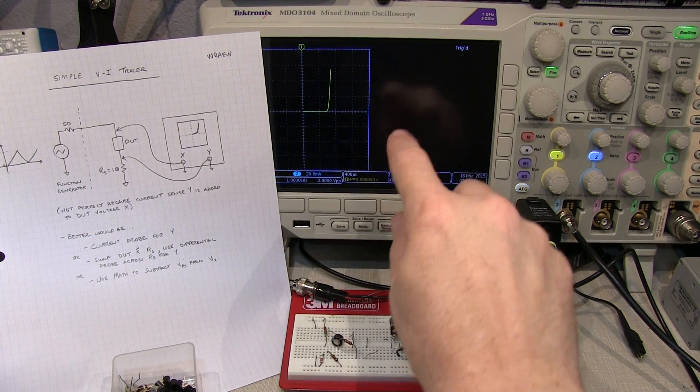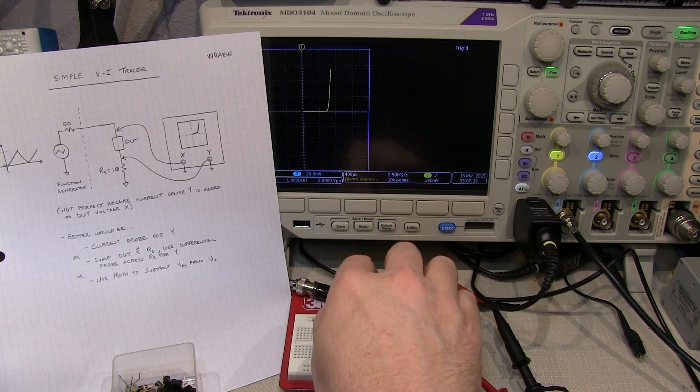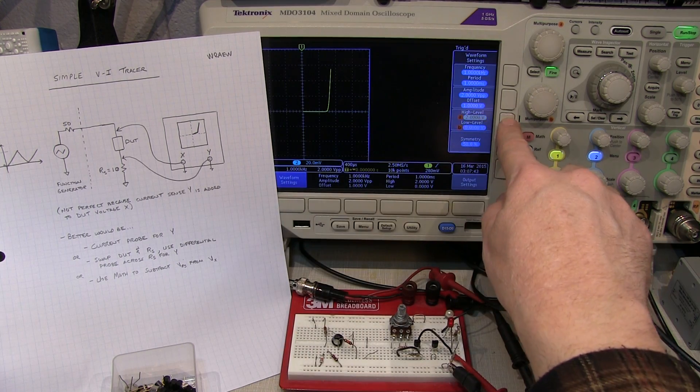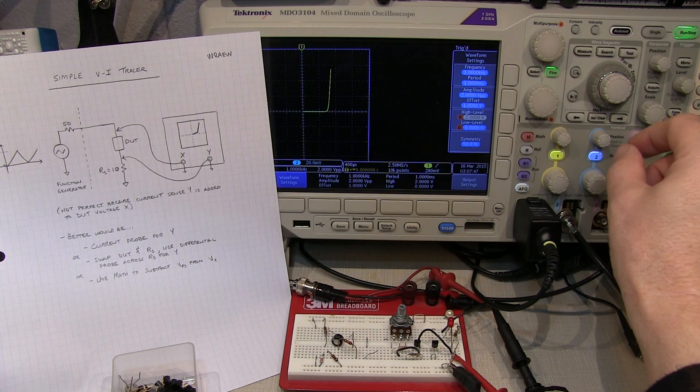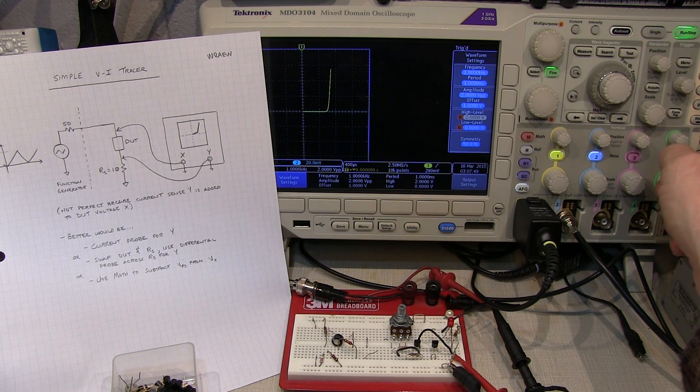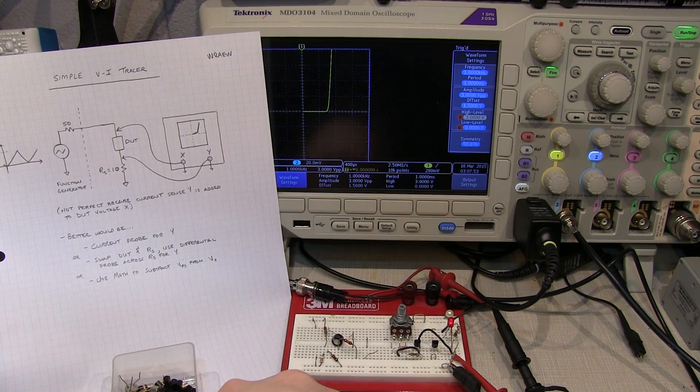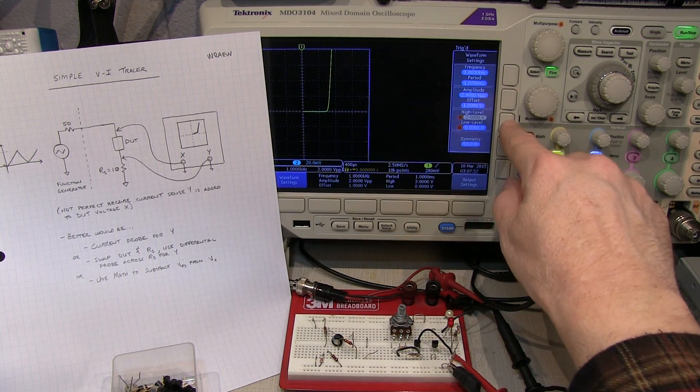We can adjust how far we sweep one way or the other by adjusting the waveform characteristics of the function generator. For example, if I take the high level, how far I'm driving the function generator, and bring it to a larger level, in this case let's say 3 volts instead of 2, we can see that I've extended that curve up above the top of the screen here now. I bring that back down to 2 volts.